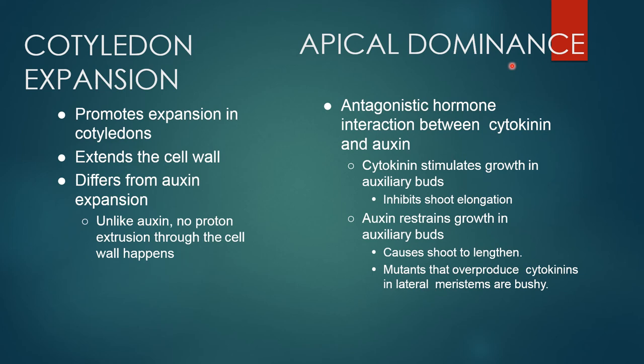Apical dominance: there is an antagonistic hormone interaction between cytokinins and auxin. Cytokinin stimulates growth in axillary buds and inhibits shoot elongation. Auxin restrains growth in axillary buds and causes the shoot to lengthen. Mutants that overproduce cytokinins in lateral meristems are bushy.